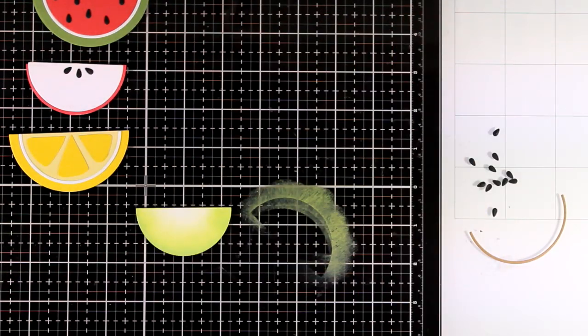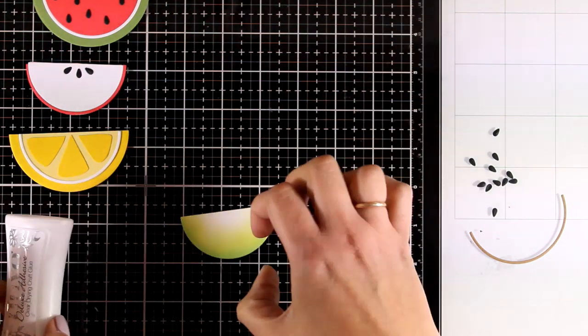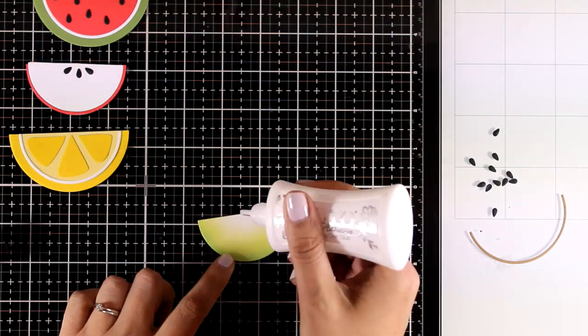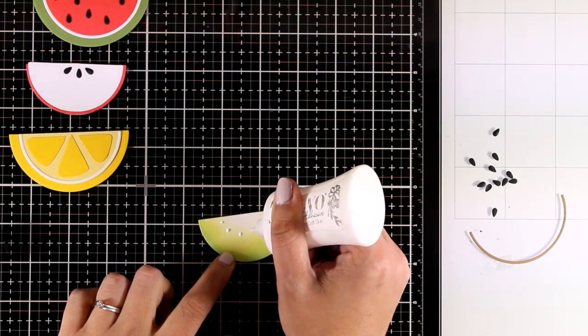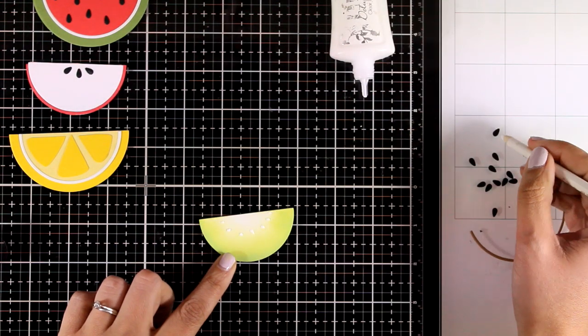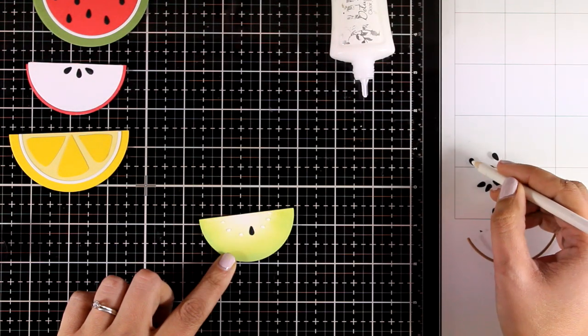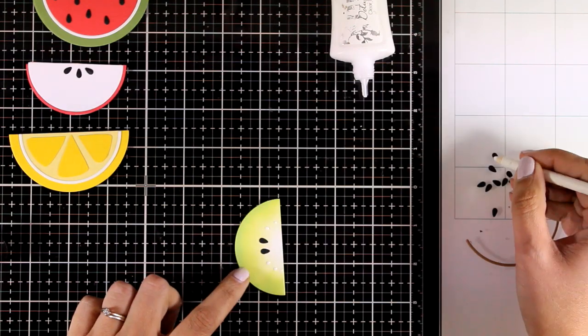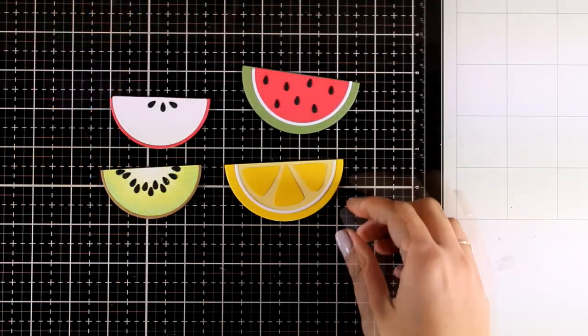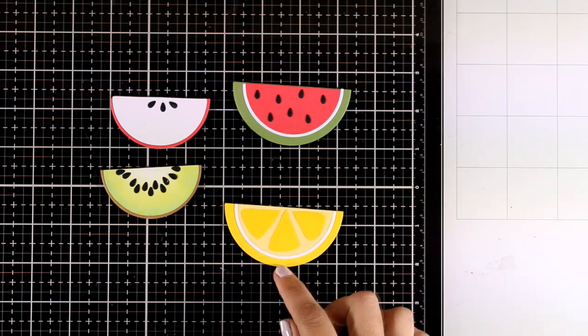I also cut out a bunch of seeds—I need lots of them for my kiwi. I'm going to add some dots of glue and stick them all around in a circle. The outer part, the thin part, is made out of brown cardstock.